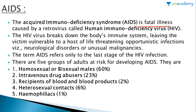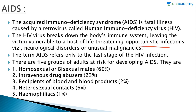The Acquired Immunodeficiency Syndrome, that is AIDS, is a fatal illness caused by a retrovirus called the Human Immunodeficiency Virus — that is the HIV virus. This HIV virus breaks down the body's immune system, leaving the victim vulnerable to a host of life-threatening opportunistic infections, namely neurological disorders or unusual malignancies.